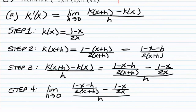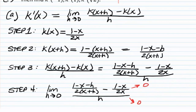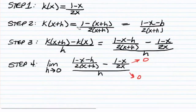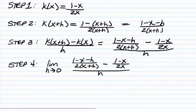We have to simplify because we can't just plug in 0. If we plug in 0, we're going to get 0 over 0, which is an indeterminate form — the top is going to go to 0 and the bottom is going to go to 0. We cannot plug in, so we're going to simplify. When we have a complex fraction, my preference is to multiply the top and the bottom by the least common denominator.